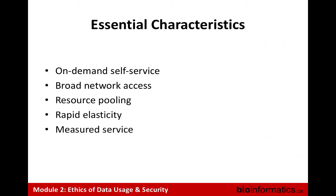Another way to think about cloud computing is to break it into essential characteristics. On-demand self-service means not having to interact with a person to set up a new account or system — you can do it yourself. Broad network access means you can access it from a variety of places — your phone, your laptop — or within a wider private network. Resource pooling means these are multi-client services: you might be running a virtual machine that seems all your own, but it may be running on the same physical system as someone else's software.